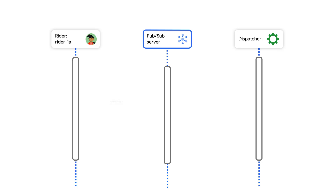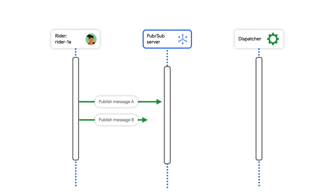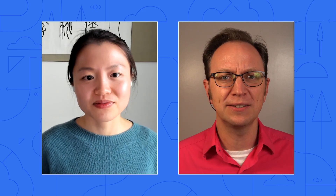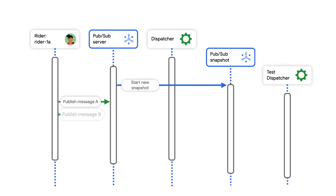So with dead letter queues and message ordering enabled, I'm eager to test out a new version of the algorithm in the dispatcher that matches riders and drivers. It would be cool to compare the algorithms side by side. I'm thinking if you can replay the messages, you can compare the new algorithm with the old algorithm. Can you explain what replay means? To replay messages, you need to create a snapshot on a given subscription. Another way to think about a snapshot is to consider it a recording that you start.